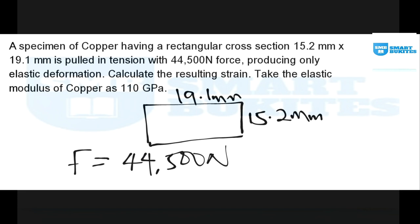Then it produces only elastic deformation. That is, it's within the elastic limit. Stress is directly proportional to strain. We are told to calculate the strain given that the Young modulus or modulus of elasticity of the copper, that is E, is equal to 110 gigapascal.